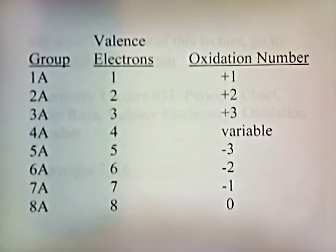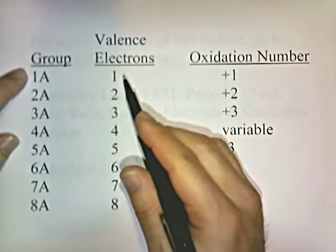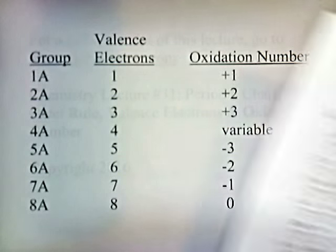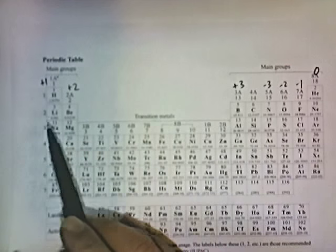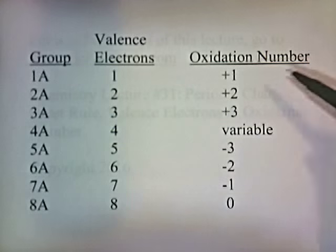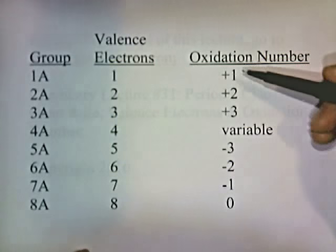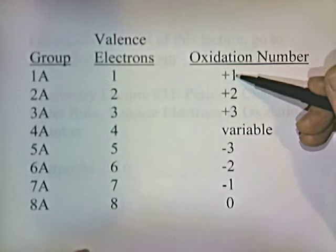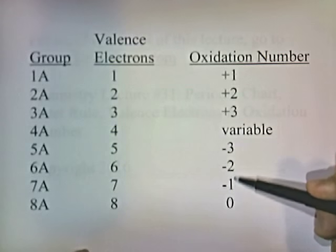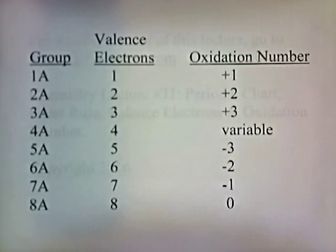Here's a summary of what you should memorize. Group 1A has 1 valence electron, 2A has 2, and so on — the group number corresponds to the number of valence electrons: 1, 2, 3, 4, 5, 6, 7, 8. The oxidation numbers: groups 1A through 3A are plus 1, plus 2, plus 3. Group 4A is variable. Group 5A is negative 3, group 6A is negative 2, group 7A is negative 1, and group 8A is 0. If you keep in mind how many valence electrons each group has, you can figure out how many electrons it wants to lose or steal, and from that you can determine the oxidation number.